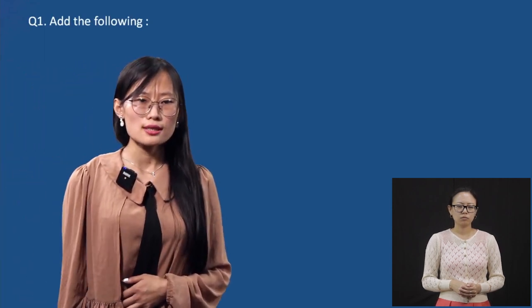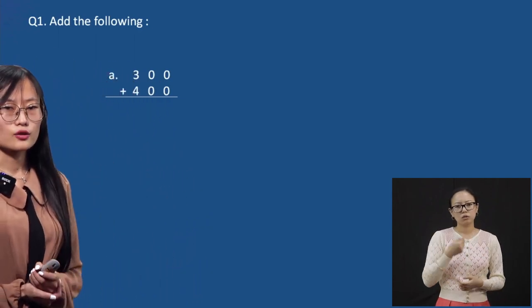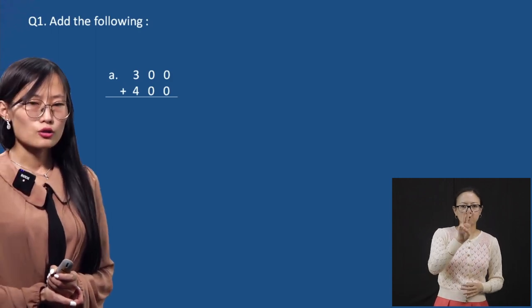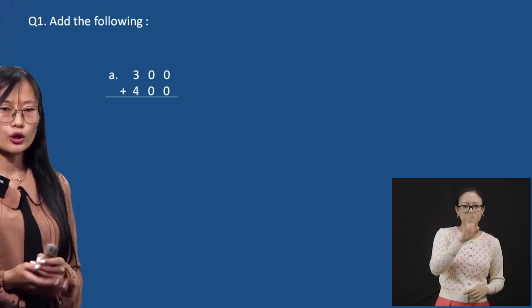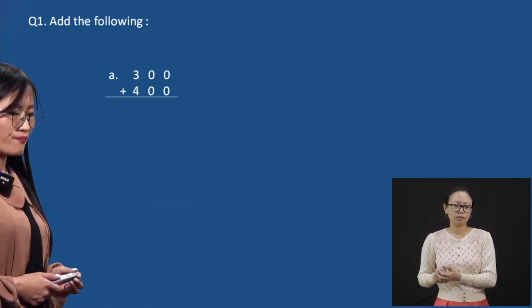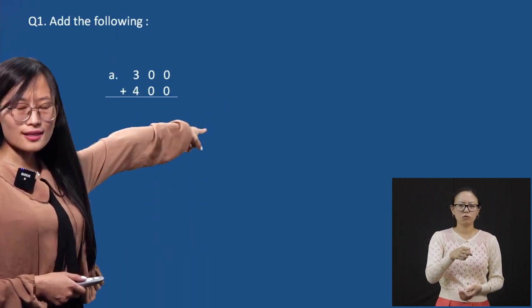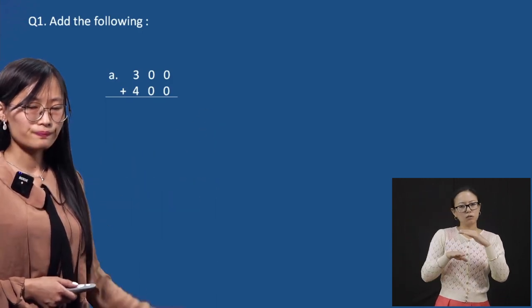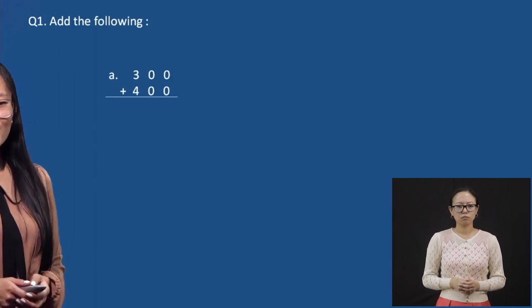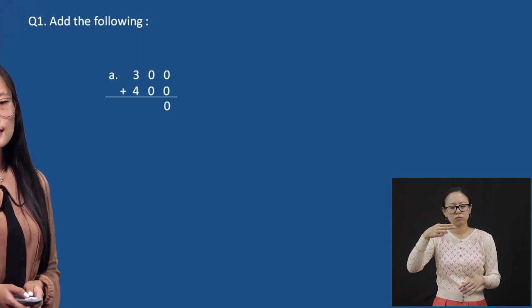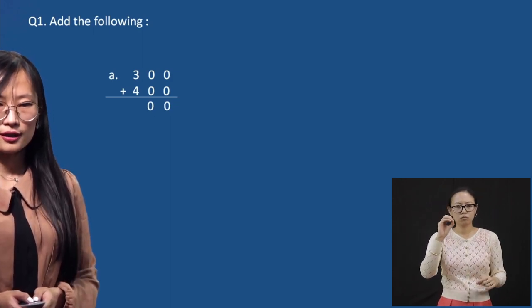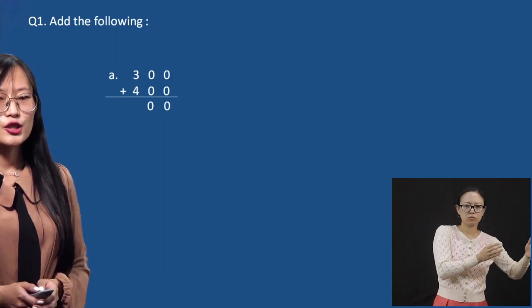Now we will do some questions — add the following. You will get a mixture of both regrouping and without regrouping. The first question is 300 plus 400. We start from ones: zero plus zero is zero. Tens: zero plus zero is zero. Hundreds: three plus four is seven.